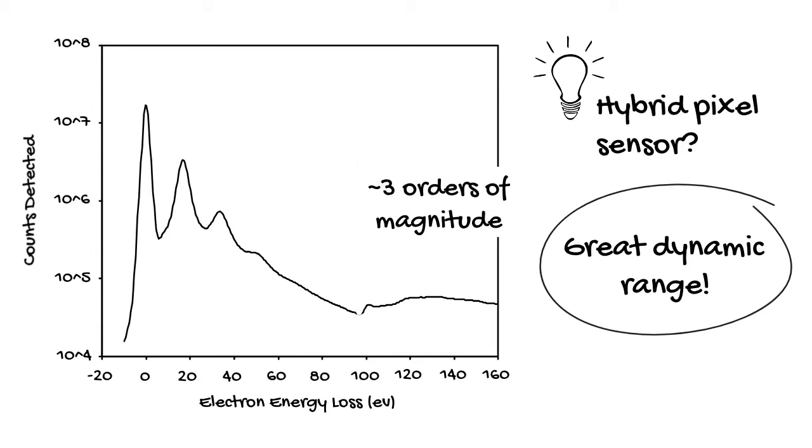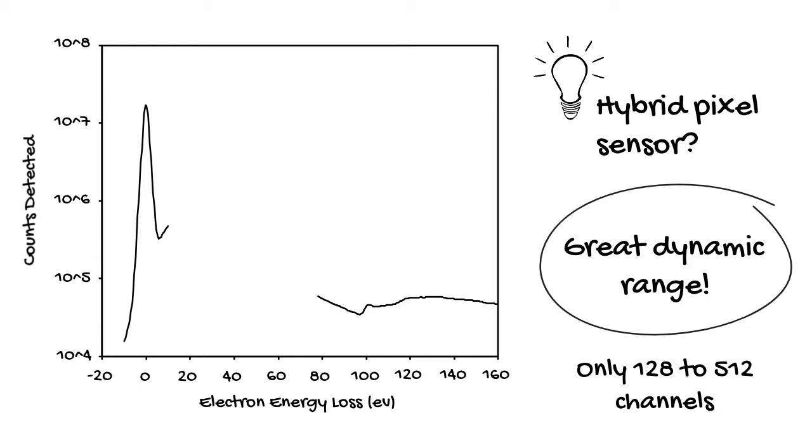Unfortunately, this turns out to be a no-go. Because they have very large pixels, hybrid pixel detectors are limited to very small array sizes. Many hybrid detectors have between 128 and 512 columns, or channels, available, which means that you'd actually be left with a very short spectrum.